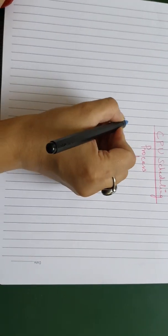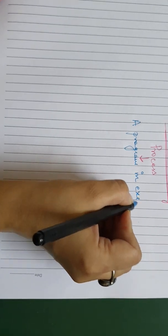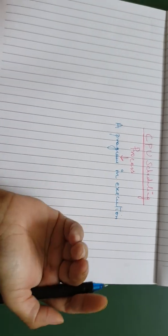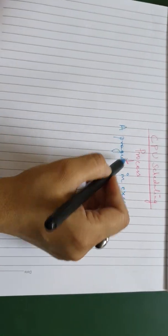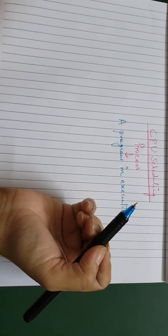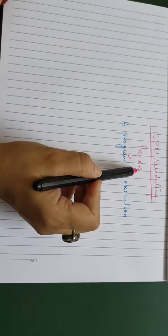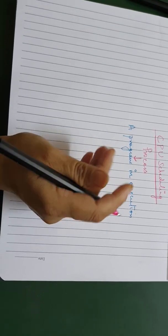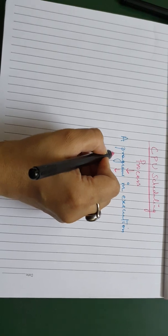So what exactly is a process? We can say a process is a program in execution. We make a code — a sequence of instructions — and that leads to a process. When you start executing that program, that program becomes a process. In simple words, a program in execution is a process. Now we deal with a multi-programming environment.